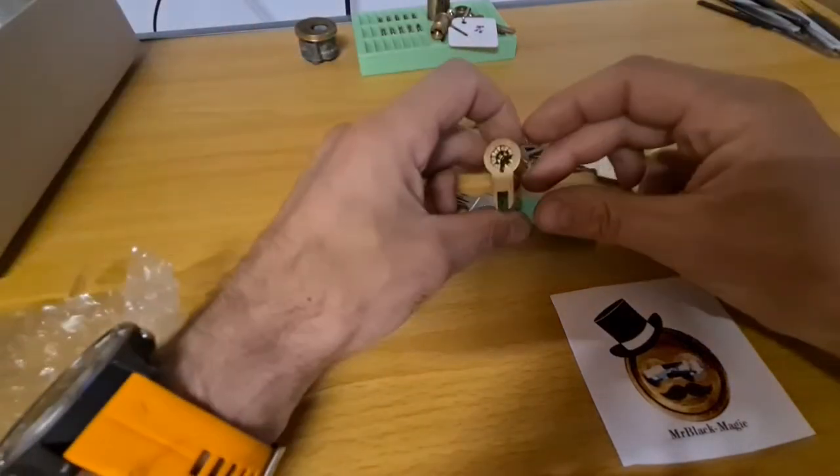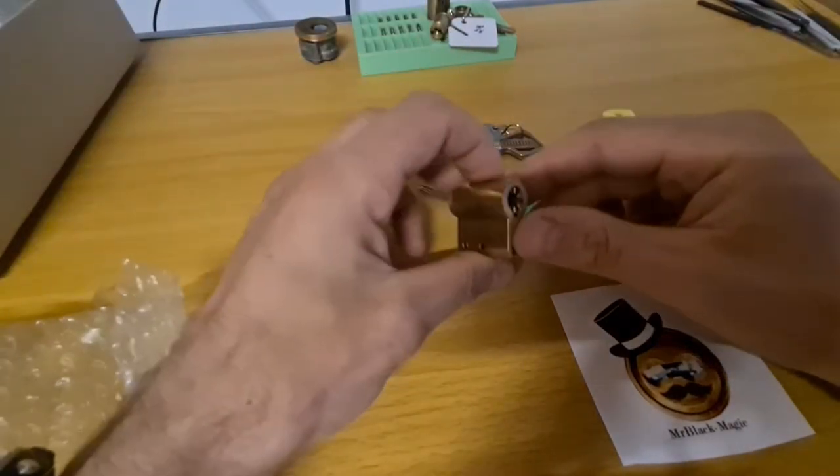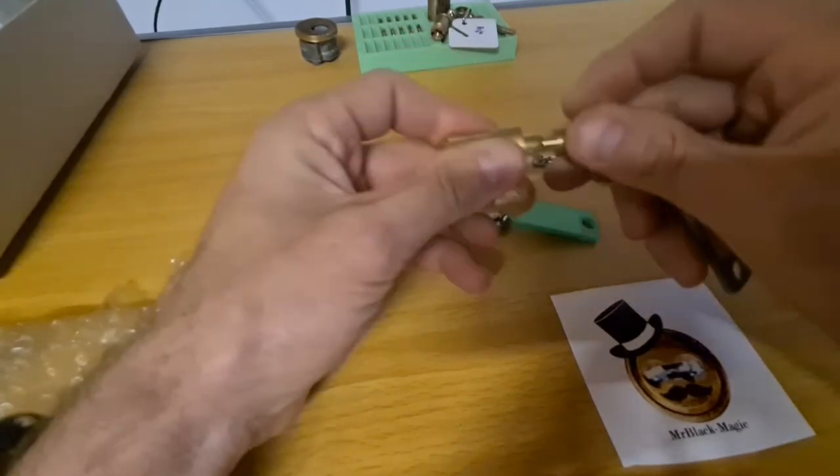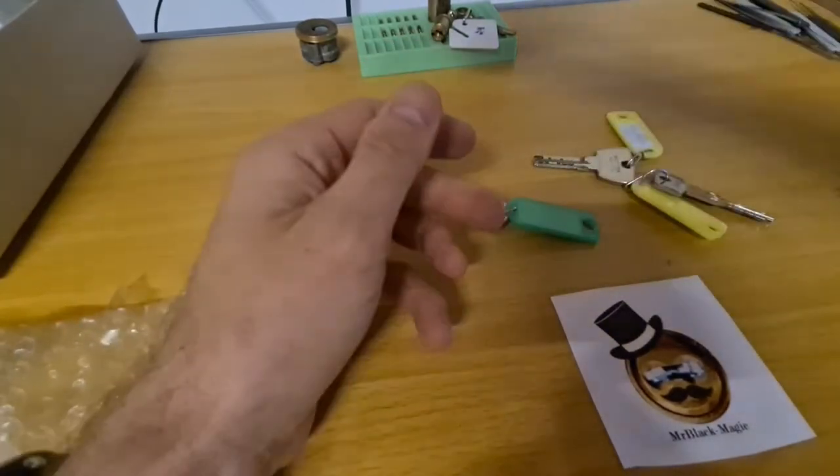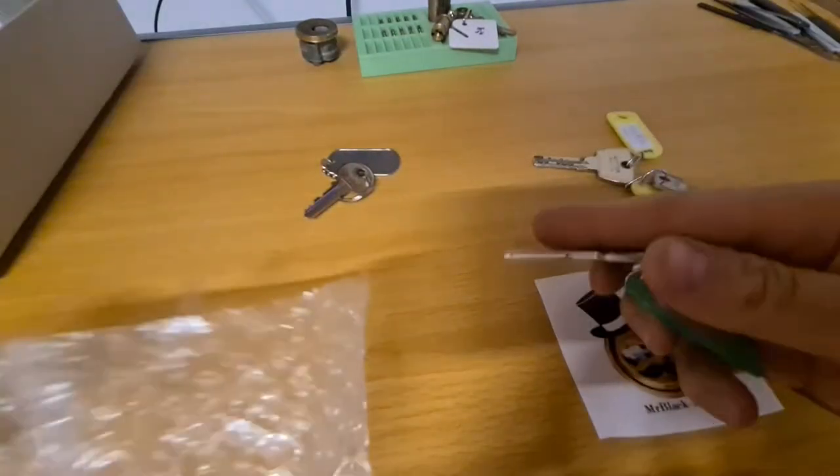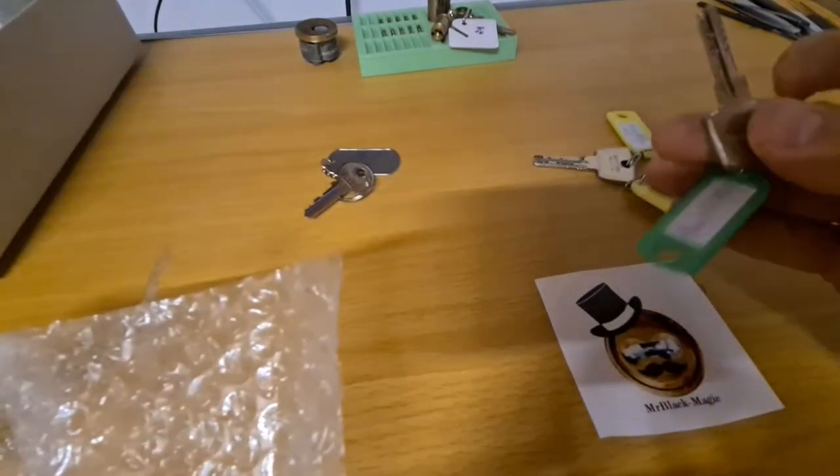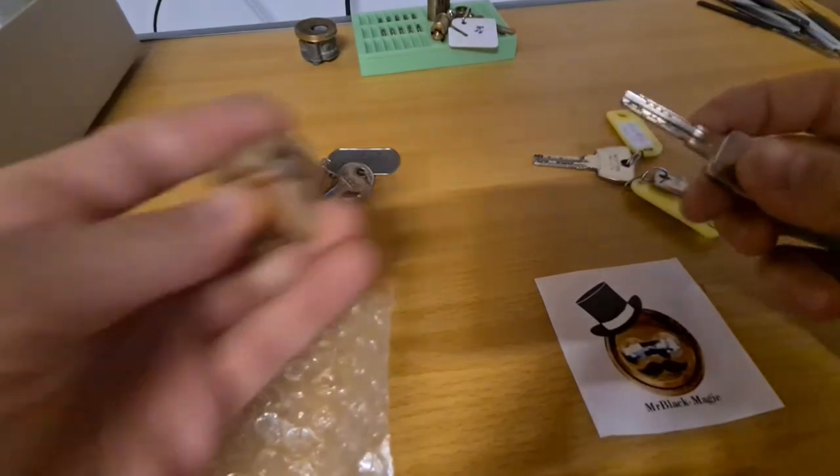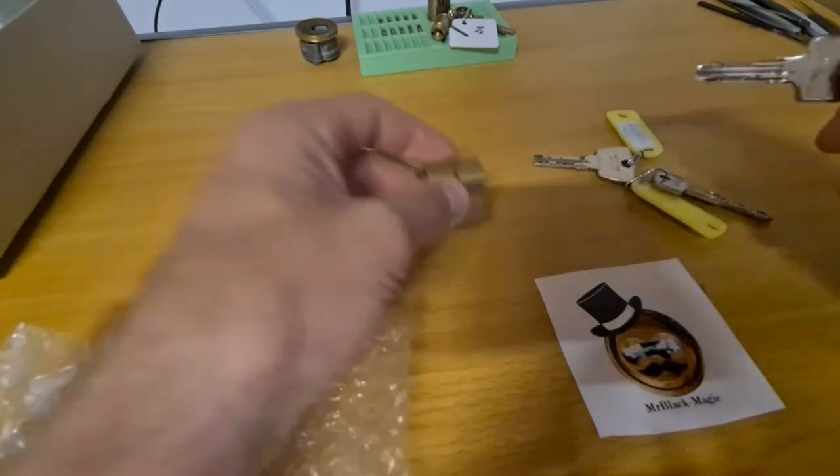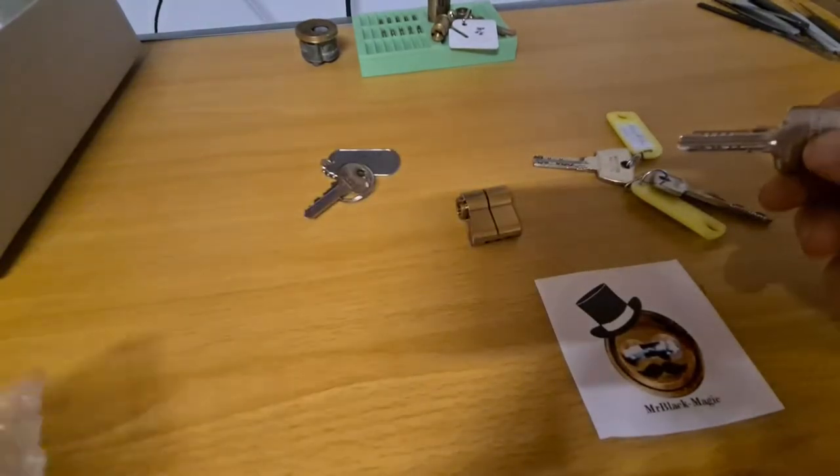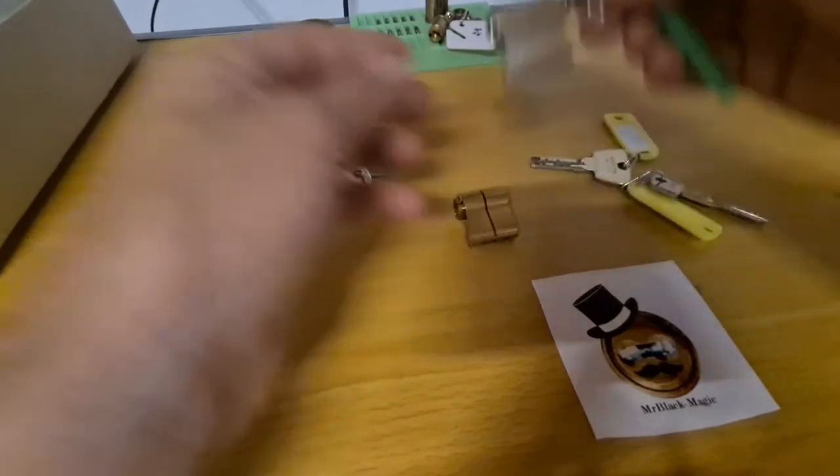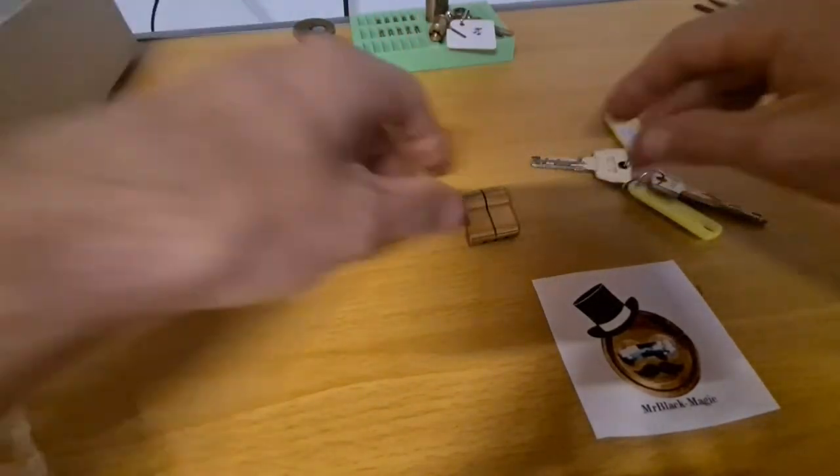There is one Pollux lock, quite a cool one. Then there is an Abus EC750. That's this one I guess. Nope, it is not, even though the key fits. That must be this one. It goes into the box.